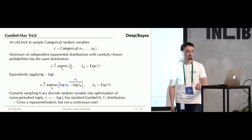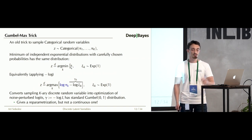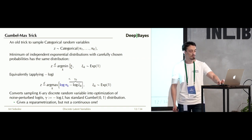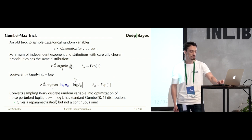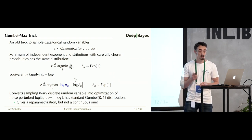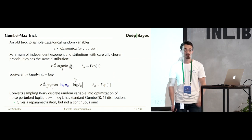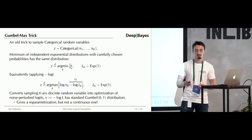Of course this reparameterization is non-differentiable — although it separates the log parameters we want to optimize from the randomness, differentiating through the argmax operator is non-differentiable. So having identified the argmax as the only point of non-differentiability, let's relax the argmax to get a continuous relaxation amenable to the reparameterization trick for gradient estimation.